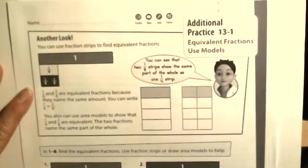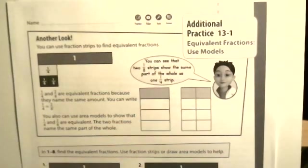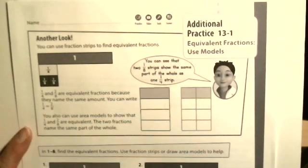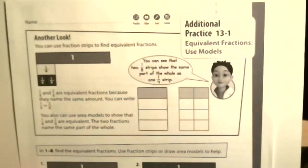Okay guys, we're going to do the additional practice 13-1 together before you go to the Pearson site and do the practice buddy additional practice and submit that for a grade. Remember, this is in your additional practice book — it's page 155. I'm going to do this one with you and that will serve as a model for what you're going to do on the Pearson site.